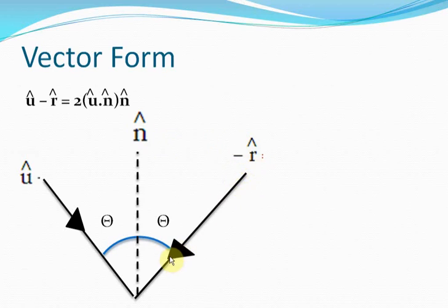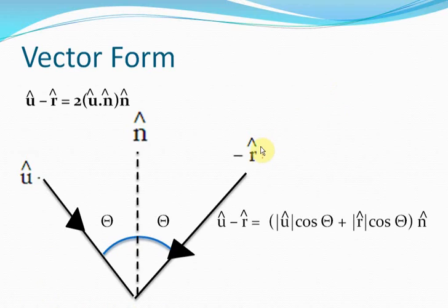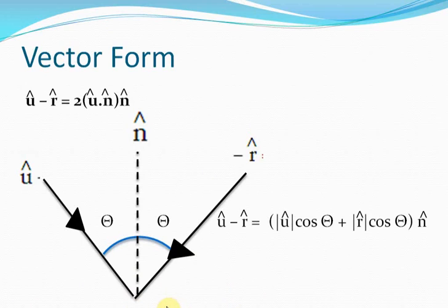I've inverted the reflected ray in this picture, which is why I've written minus R̂. I'll now prove this. If you add û and minus R̂, you can resolve the incident ray vector into two perpendicular parts — one part will be |U| cos θ in the direction of the normal, and the other part will be |U| sin θ perpendicular to it. Similarly, minus R̂ can also be resolved into two directions. The components of both the incident ray and the reflected ray perpendicular to the normal will cancel each other out, because their magnitude is the same (both are unit vectors) and their directions are opposite.